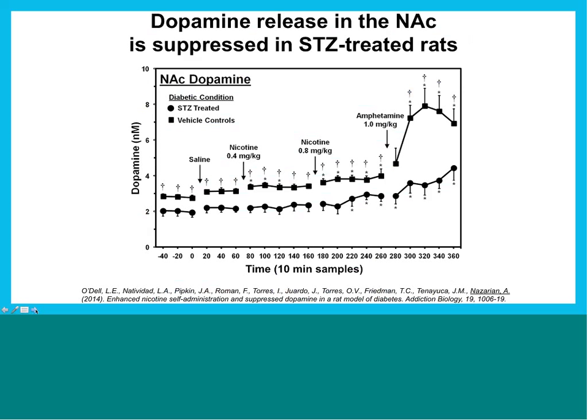We measured dopamine levels in the nucleus accumbens. The Y-axis shows dopamine amount and the X-axis shows time course. Diabetic (STZ-treated) animals have lower baseline dopamine levels compared to naïve counterparts, and after nicotine their dopamine levels remain lower. This blunted dopamine response is not unique to nicotine — amphetamine, a drug known to strongly enhance nucleus accumbens dopamine, does so in non-diabetic animals but not as much in diabetic animals. So diabetes attenuates dopamine functioning in the nucleus accumbens.